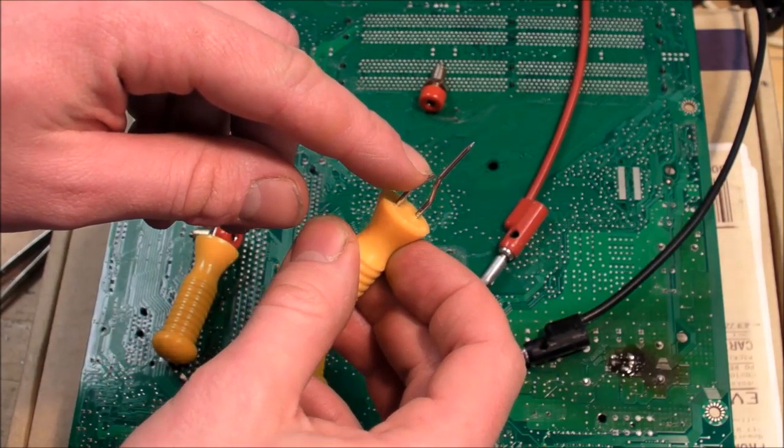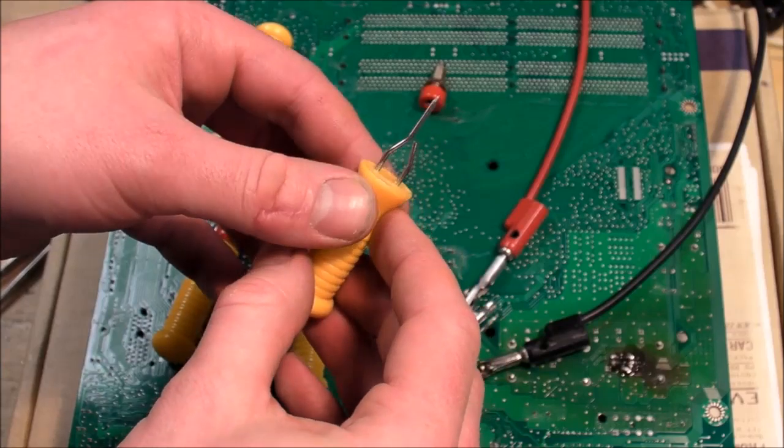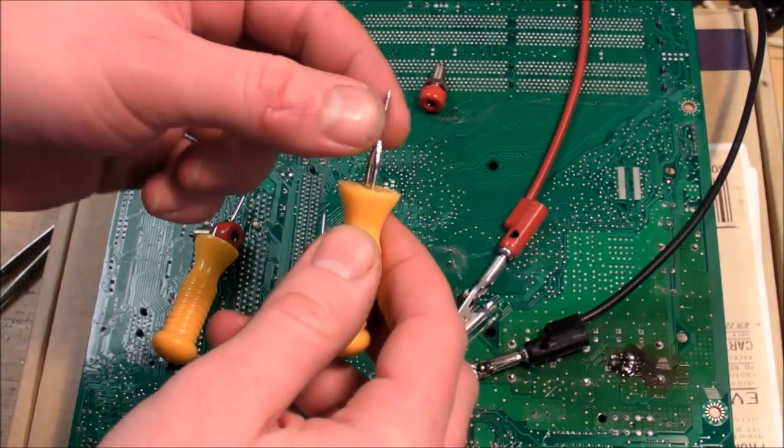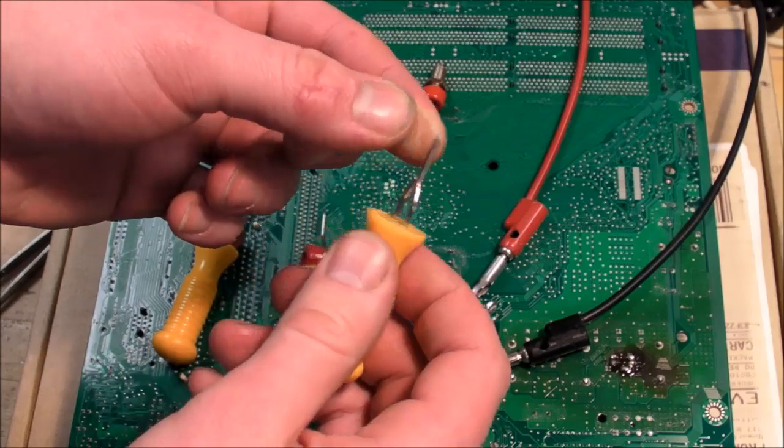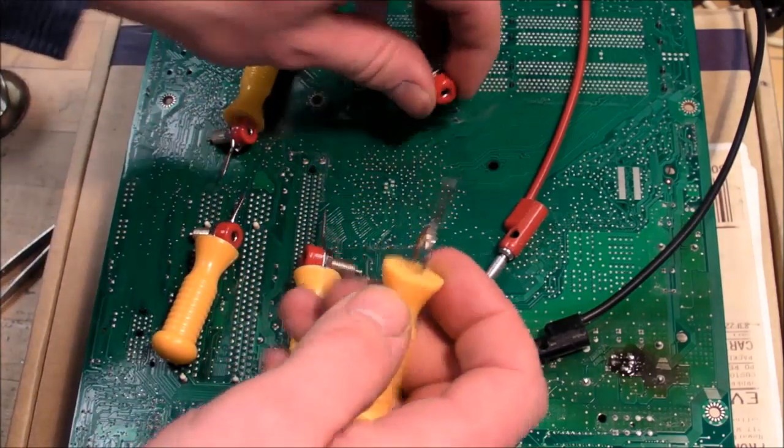I cut one of these in half and then I bent the two prongs in like that and put a good sharp point on one of them. They already do come sharp, but I had to make it even sharper on the grinder.